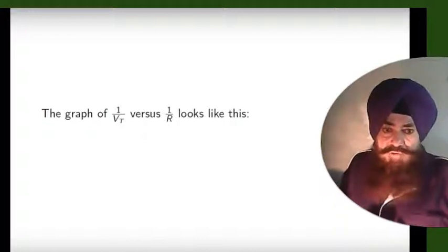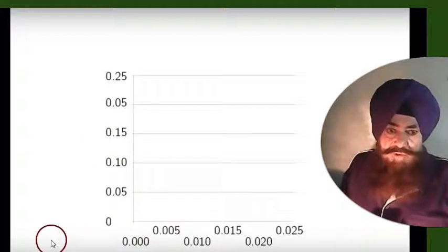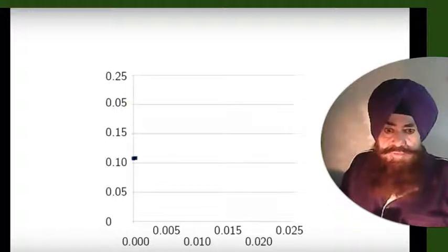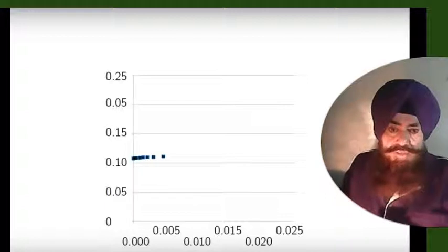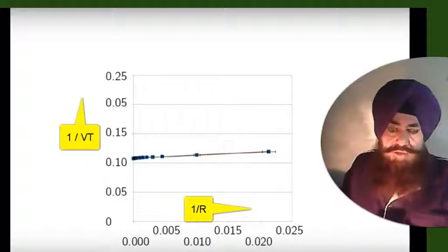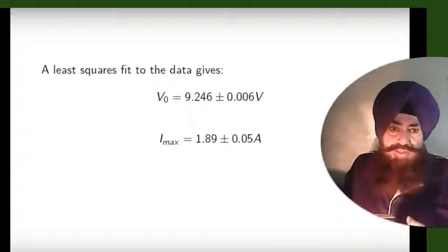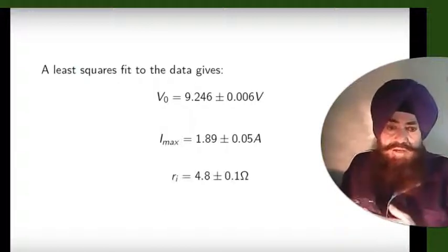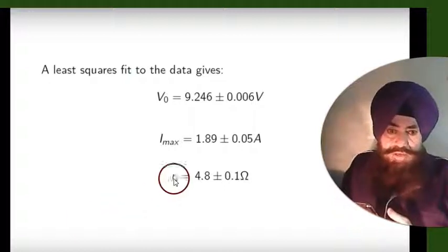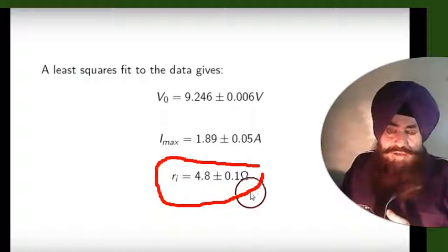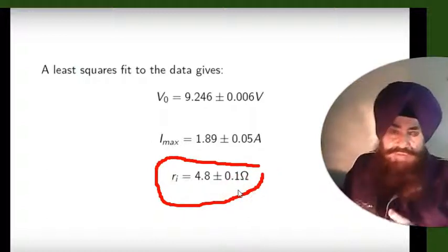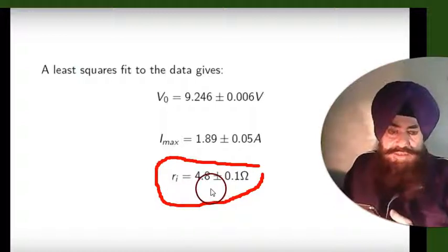Plot a graph of 1/VT versus 1/R. The slope is very small, meaning internal resistance is very small. From the graph, V₀ is the source voltage and the internal resistance has been found from the previous graph. This is the value of internal resistance.